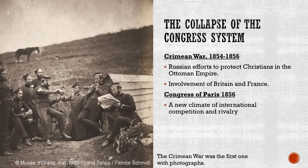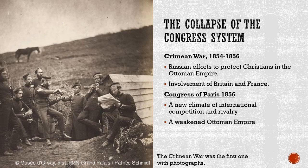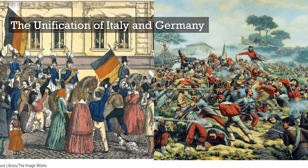The Crimean War essentially ended in a stalemate. The peace treaty signed at the Congress of Paris in 1856 initiated a new climate of international competition and rivalry. The Ottoman Empire was weakened but still around. The congress system — the Concert of Europe, the idea coming out of the Congress of Vienna that we could all get along like gentlemen over brandy — that was over. Instead it would be replaced by something called Realpolitik: the idea that might equals right. This intense rivalry and competition would continue for the next several decades, see the birth of Germany and Italy, and continue until the First World War.